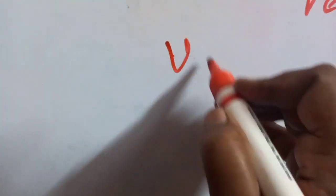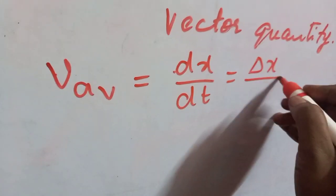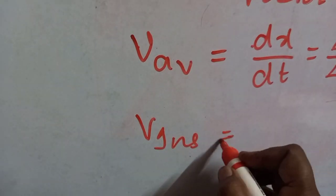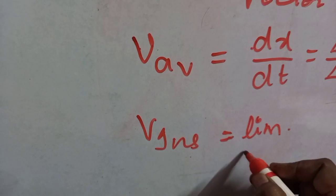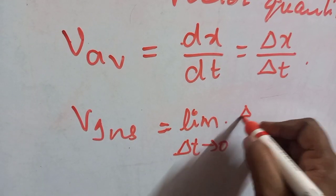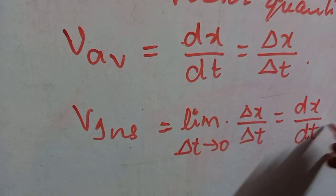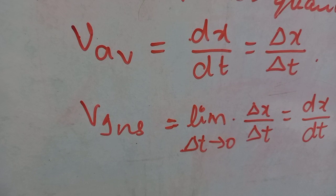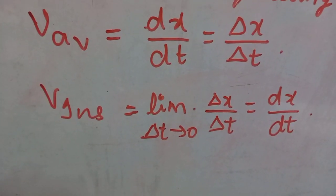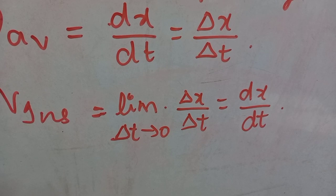Average velocity is Δx/Δt. Instantaneous velocity is the limiting value: v = lim(Δt→0) Δx/Δt = dx/dt. Uniform velocity is the velocity in which displacement is covered in equal intervals of time.